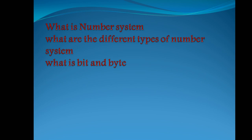What is a number system, and what are the different types? A number system is a collection of numbers used to represent various digits. The binary number system uses two digits — zero and one — to represent any number. Each digit is called a binary bit. A group of eight bits is called a byte.